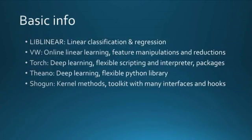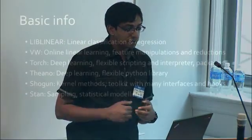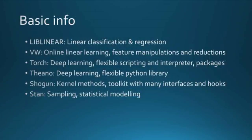I think Shogun is probably the most general purpose toolkit of all the things we discussed. It was mostly built around kernel methods, but now provides several other functionalities. Stan comes more from the statistical and probabilistic modeling point of view, and sampling is probably the strongest suit, although LBFGS-based optimization is implemented as well.